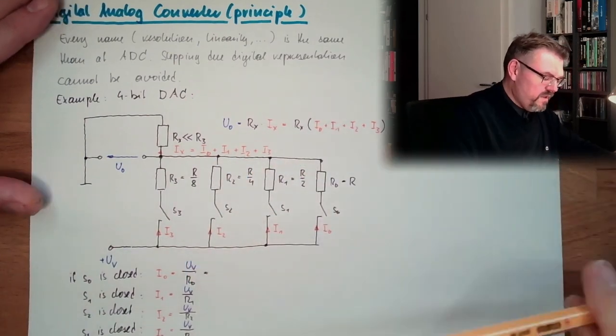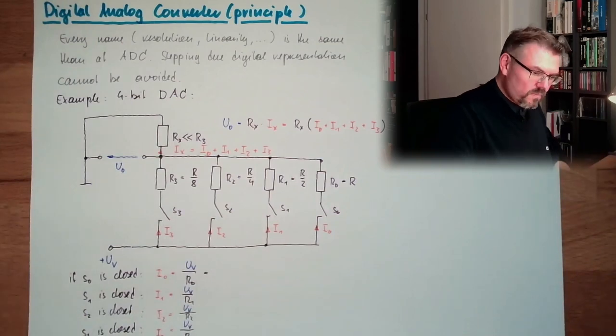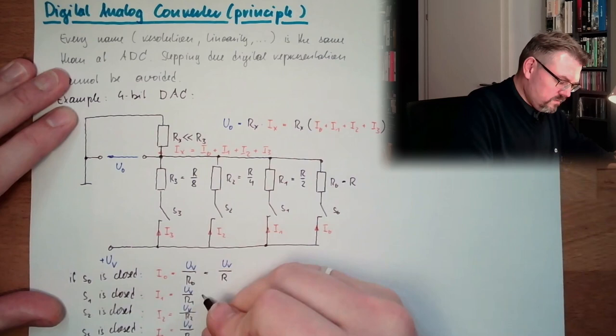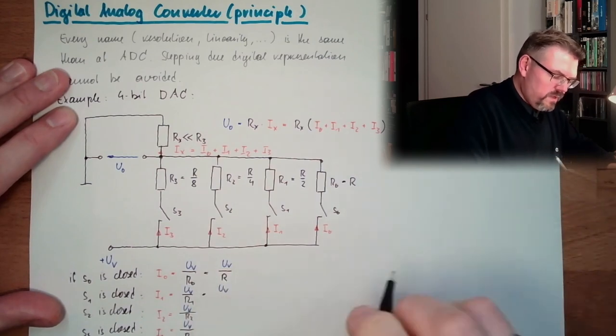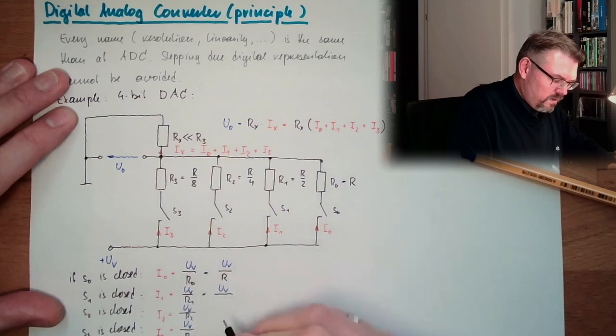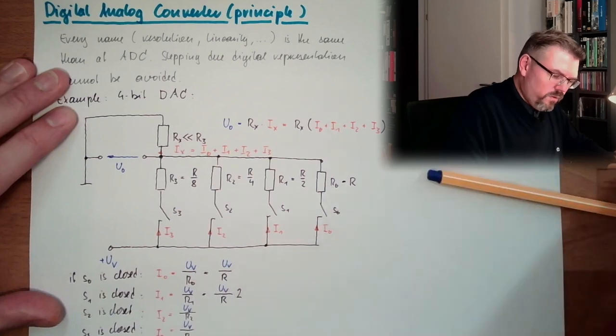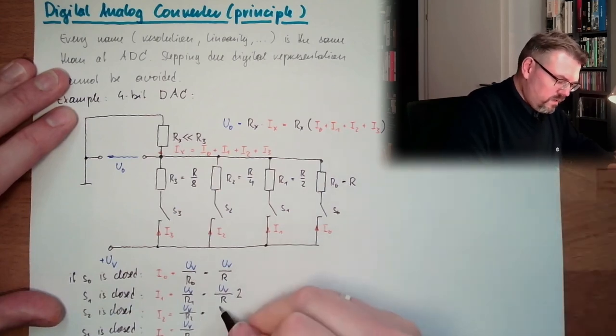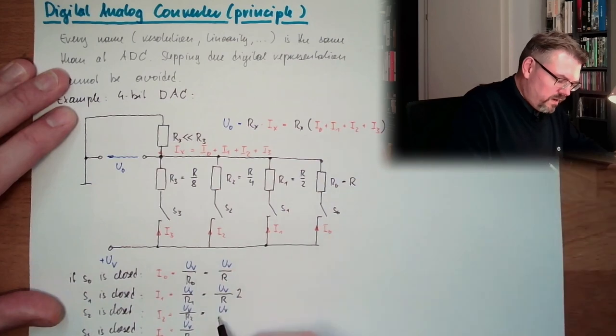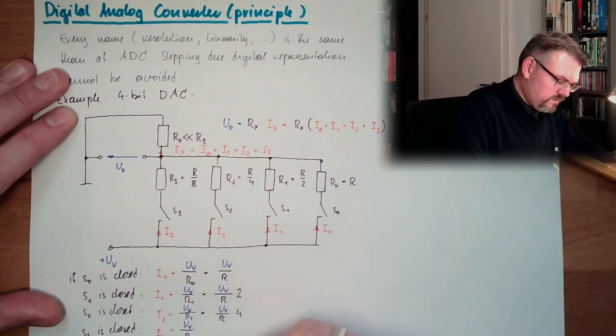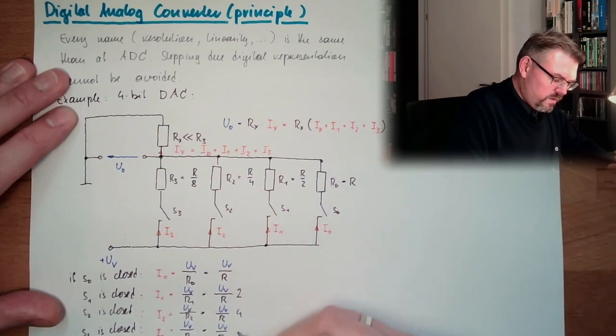So actually, what we have here is UV divided by R. And here we have UV divided by R two times. And here we have UV divided by R four times, because it's R quarter. And here we have UV divided by R eight times.